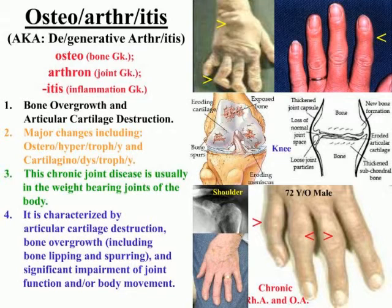or an increase in bone, and cartilaginous dystrophy, or the destruction of cartilage. This chronic joint disease affects the weight-bearing joints of the body — more specifically, the hips, the knees, and the ankles. It is characterized by articular cartilage destruction,